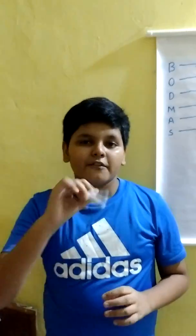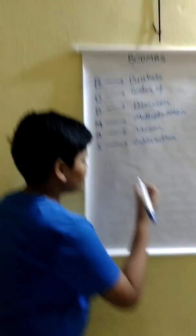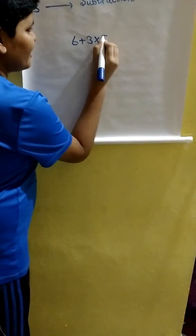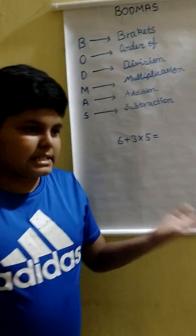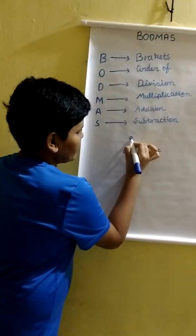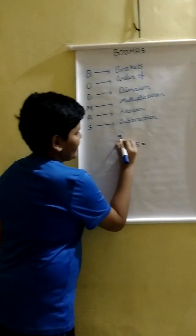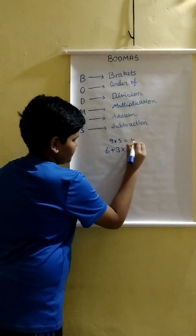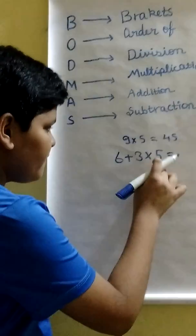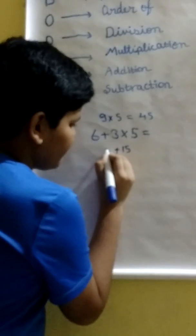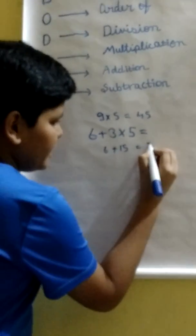Why do we use BODMAS rule? For example, if we have a sum here, 6 plus 3 times 5 equals what? Now some people may say that 6 plus 3 gives us 9 and 9 times 5 is equal to 45. Some people may say 5 times 3 gives us 15 and if we add 6 to the 15, we get 21.